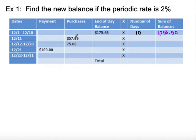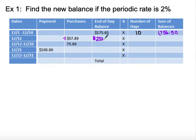Then we made a purchase of $57.89, so the end-of-day balance is no longer $175. We need to add $57.89, which gives us a new end-of-day balance of $233.54.